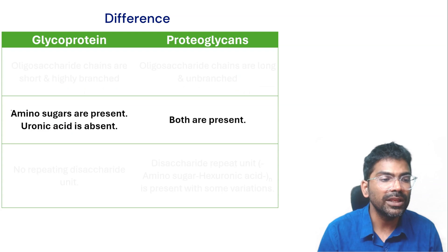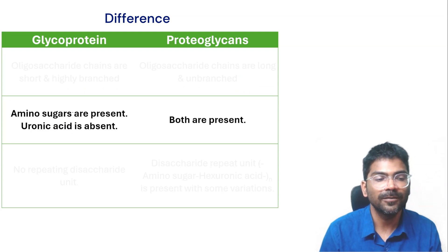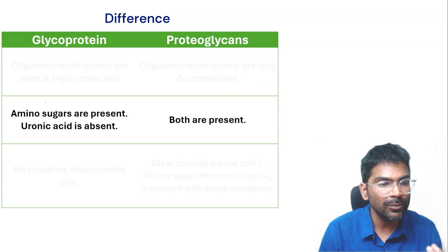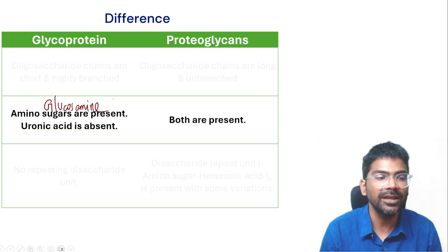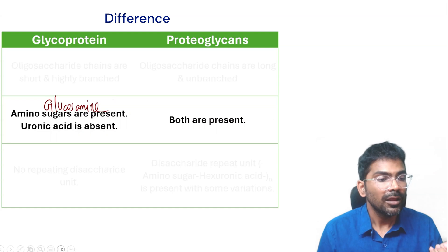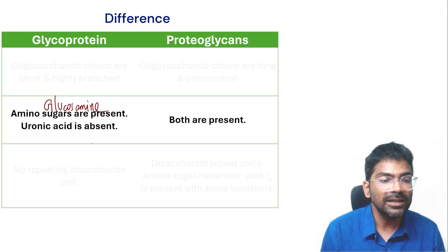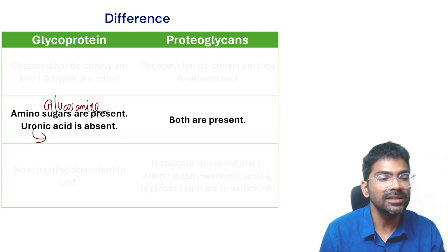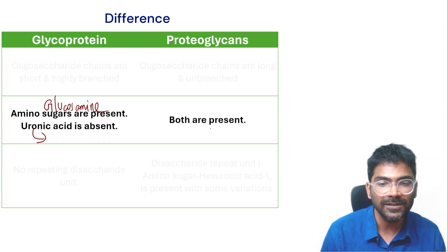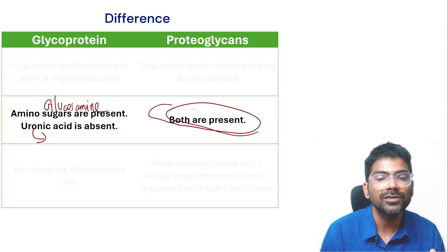In glycoproteins, amino sugars such as glucosamine are present. Uronic acids — such as glucuronic acid and iduronic acid — are absent in glycoproteins.